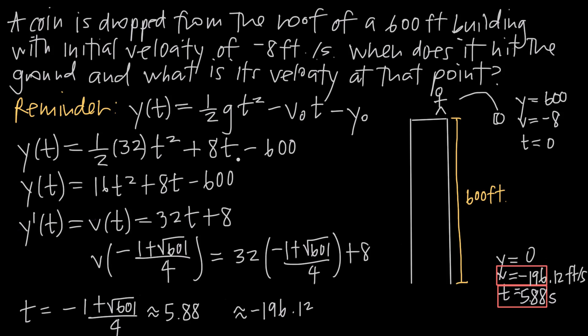And that's how you use differentiation and the position function to find the time at which the coin hits the ground and the velocity at that point.